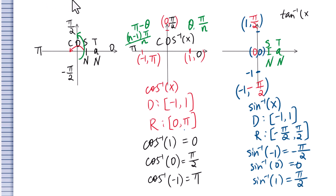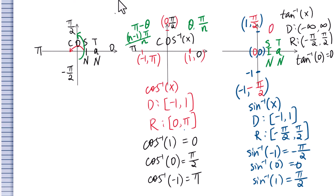Inverse tangent of x: the domain is all real numbers, and the range is from negative pi over 2 to pi over 2. Inverse tangent of 0 equals 0. If theta is the first quadrant angle, then negative theta will be the fourth quadrant angle. With pi over n as a reference angle, the fourth quadrant angle will be negative pi over n.